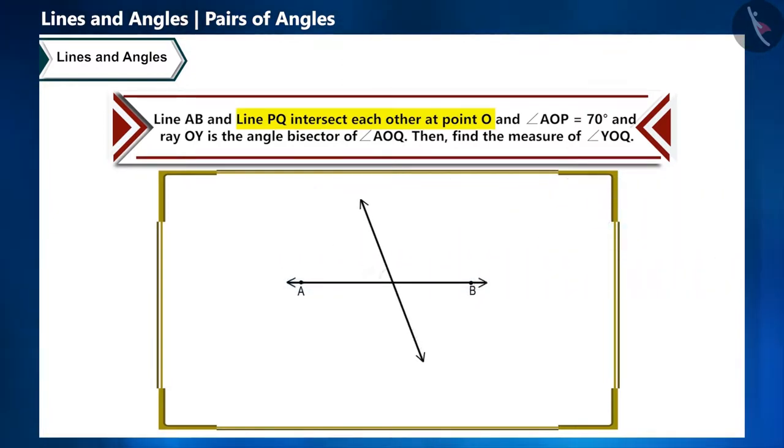We need to intersect line AB in such a way that angle AOP makes an angle of 70 degrees, so line PQ will be like this.